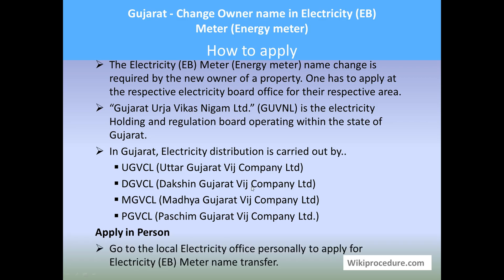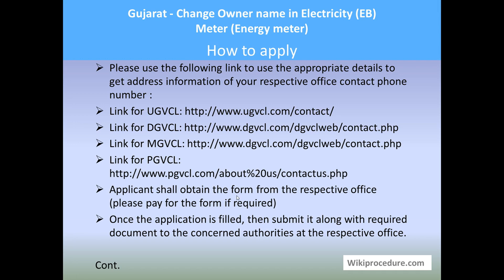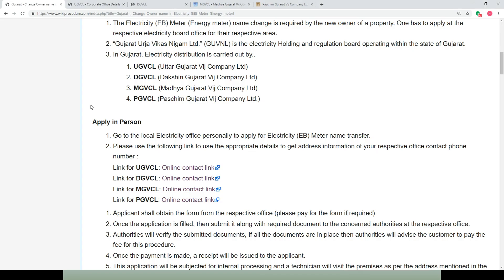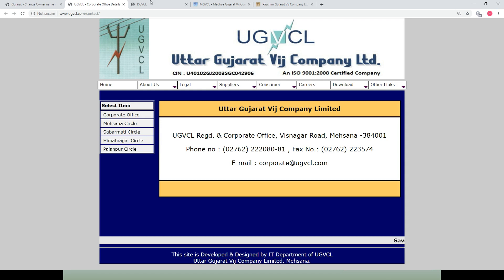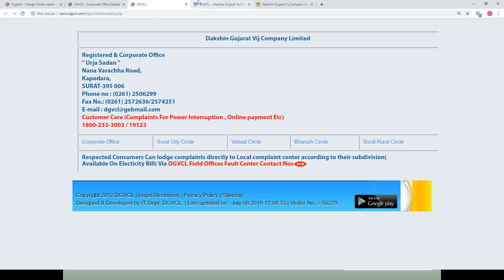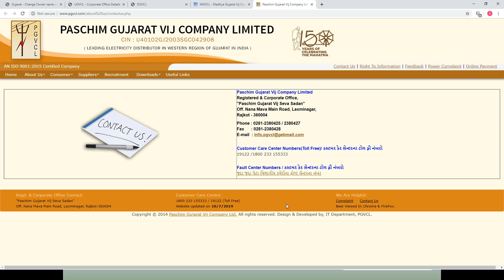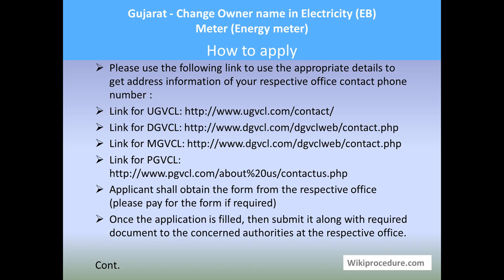Let us see the apply-in-person procedure. Go to the local electricity office personally to apply for the electricity meter name transfer. If you don't know the address for the respective board for your area, don't worry — in our apply-in-person section we have provided contact links for the respective boards. Use these links to reach the respective contact page, find the address for your requirement by calling them, and go to their respective office. The applicant shall obtain the application form from the respective officials; if required, you may need to pay for the application.